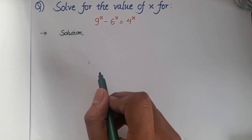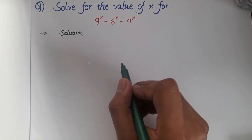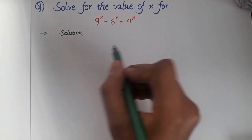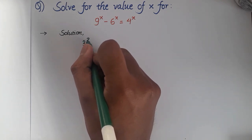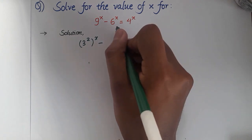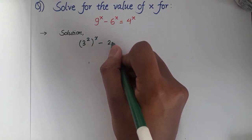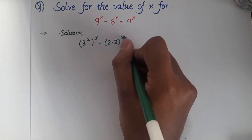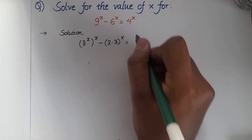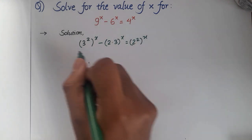How to solve for the value of x that satisfies this given equation? Let's see what we can do. Here we can write 9 as a square of 3, so 3 squared, whole power x minus 6, can be written as a product of 2 and 3. So 2 multiplied by 3 power x is equal to — and 4 here can be written as a square of 2, so 2 squared whole power x.